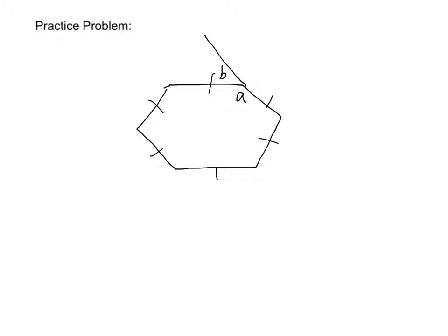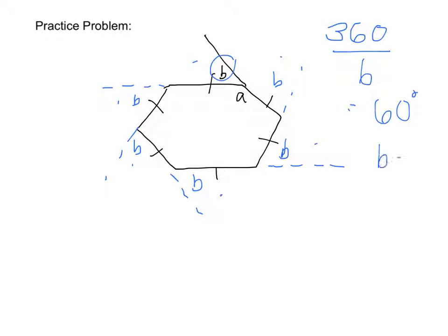First we can try to find b, so we know that the exterior angles are going to add up to 360. If we had more exterior angles here, they'd all be congruent to b, because it's a regular polygon. They're all going to add up to 360. We have six of the same angles here, so we just divide 360 by 6 to get 60 degrees, and that's what b equals.